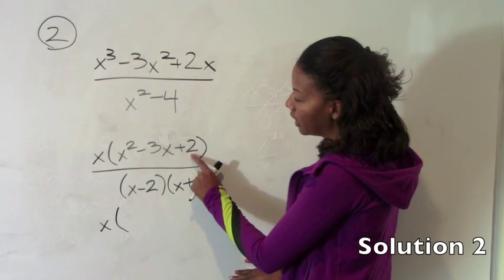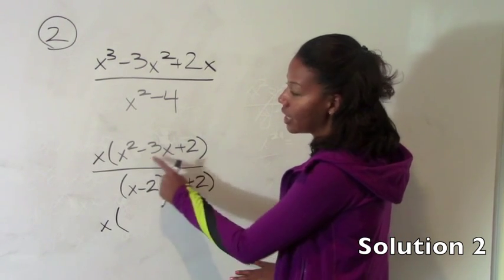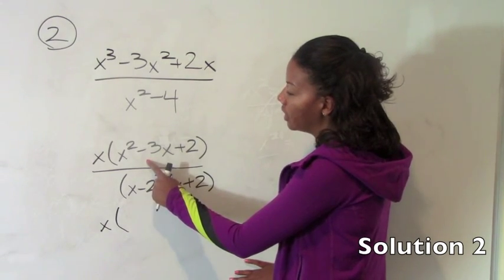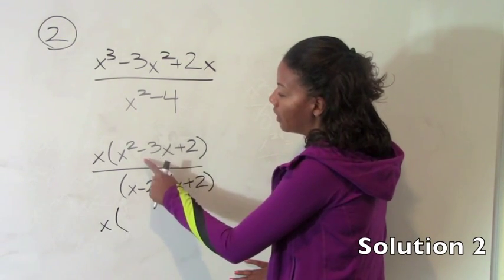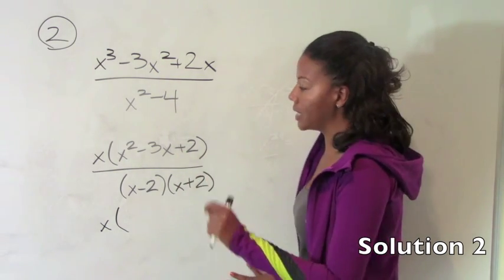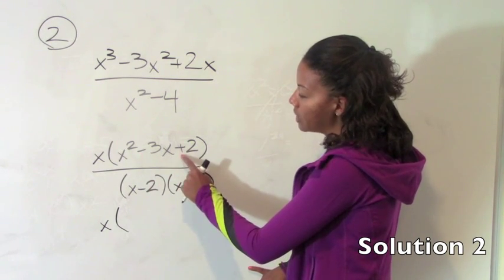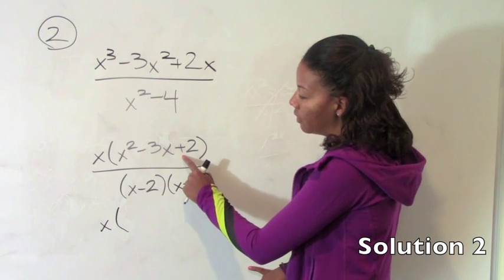So to remind you, we're looking for two numbers that multiply together to give us 2 and add together to give us negative 3. Since our middle term is negative and our last term is positive, both of those numbers must be negative. Because a negative plus a negative will make this negative, but the negative times the negative will make this positive.